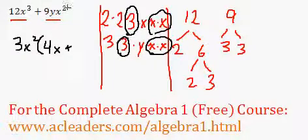Plus 9yx squared divided by 3x squared. 9 divided by 3 is just 3. Now, the x squareds are going to cancel out. And we're going to end up with a y.